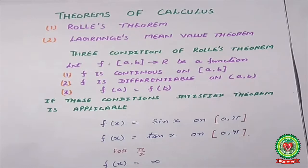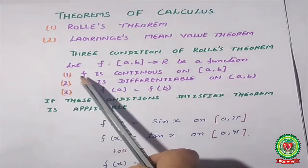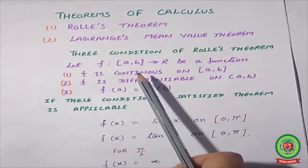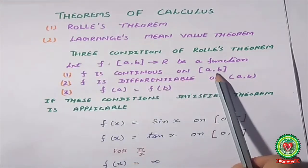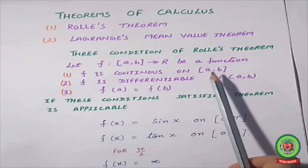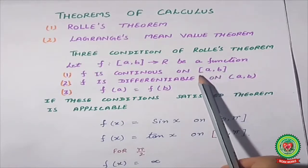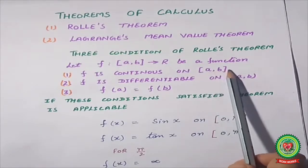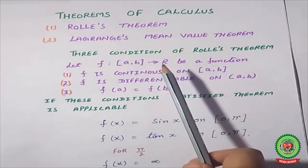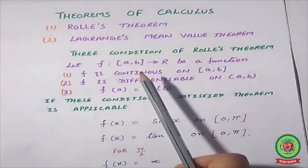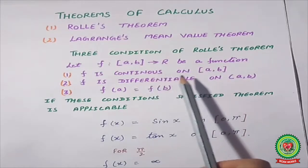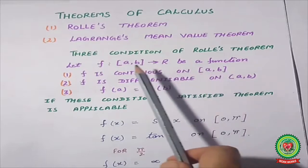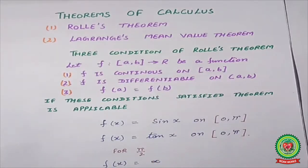Rolle's Theorem has some conditions. There are three basic conditions; if those conditions are satisfied, then only Rolle's Theorem is applicable. The first condition: the given function must be continuous on the given closed interval — including those endpoint values, which may be any real numbers. Continuous means if you substitute any value in the given function, an answer will definitely exist.